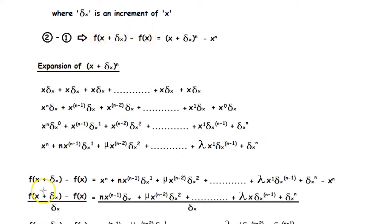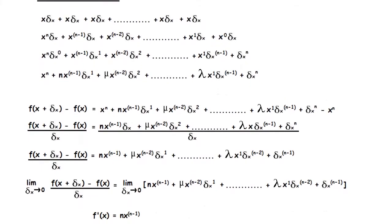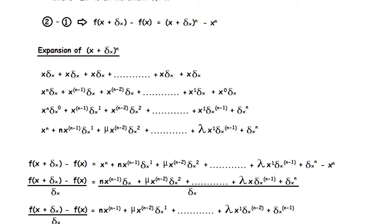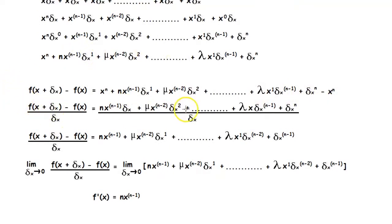Now we substitute this in our equation. So f of x plus delta x minus f of x is equal to x to the power n plus n into x to the power n minus 1 into delta x, plus nu into x to the power n minus 2 into delta x squared, and so on, until we have lambda into x into delta x to the power n minus 1, plus delta x to the power n, minus x to the power n. Then we divide both sides by delta x. Every term is divided by delta x, so the first term becomes n into x to the power n minus 1, the second term becomes nu into x to the power n minus 2 into delta x, and so on until the last term is delta x to the power n minus 1.